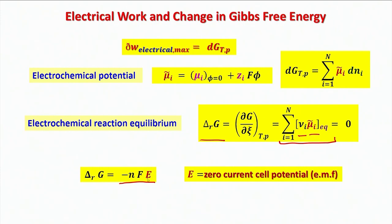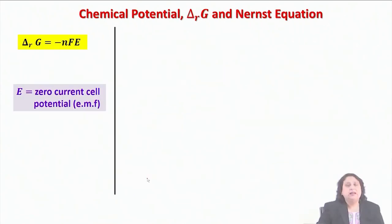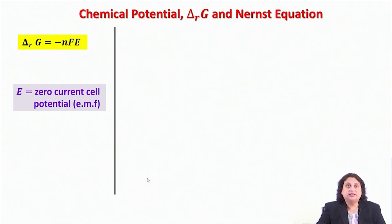If I know delta_RG, then depending on its value, I should be able to find the corresponding condition for spontaneity of this chemical reaction equilibrium — whether for a given composition the system would reach equilibrium, or whether for the given composition the cell is going to act as an electrolytic cell. With this background in mind, let us go ahead and establish the most useful form of these equations, which is the Nernst equation.